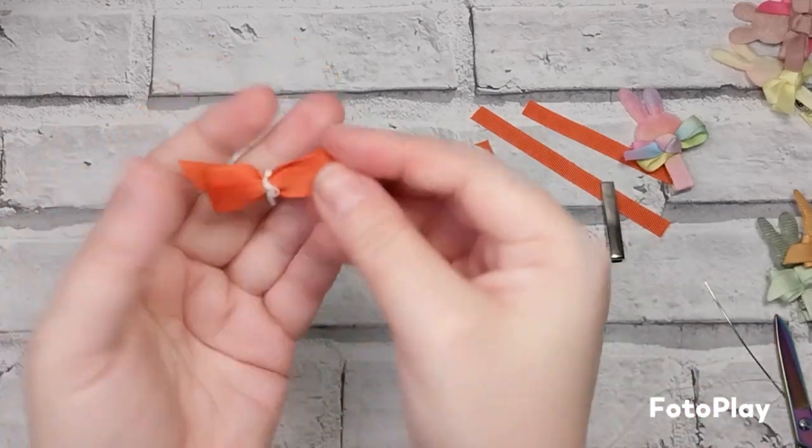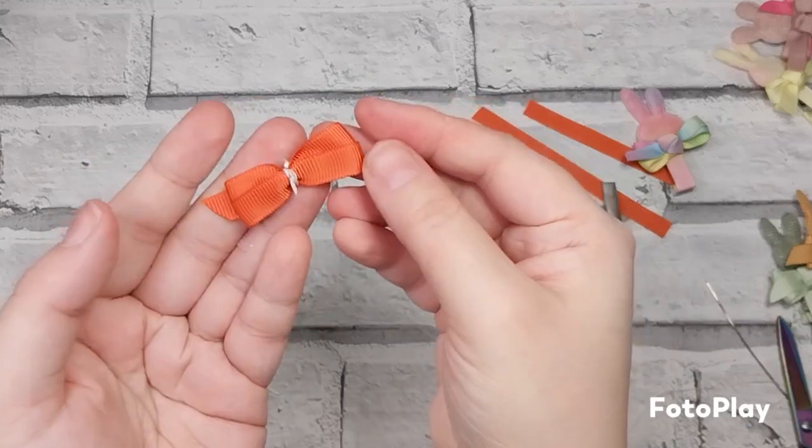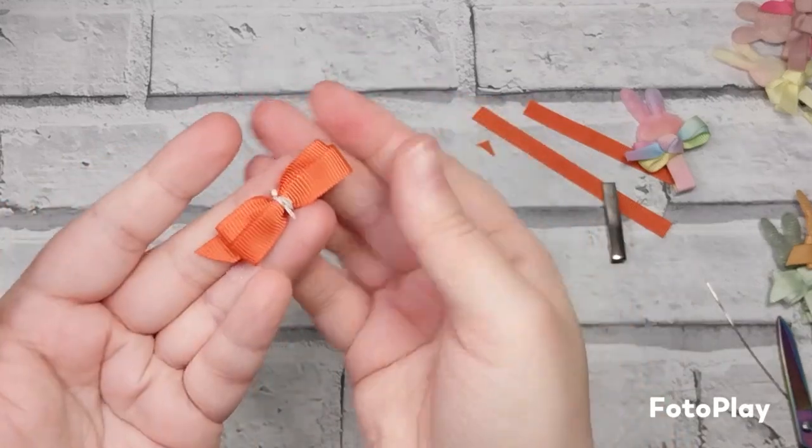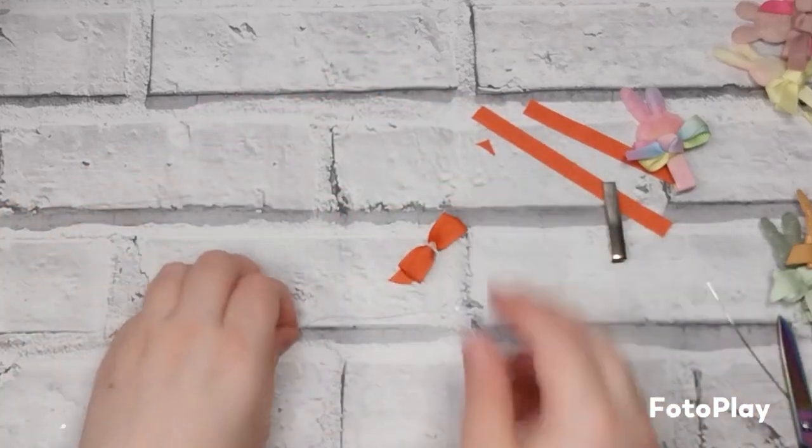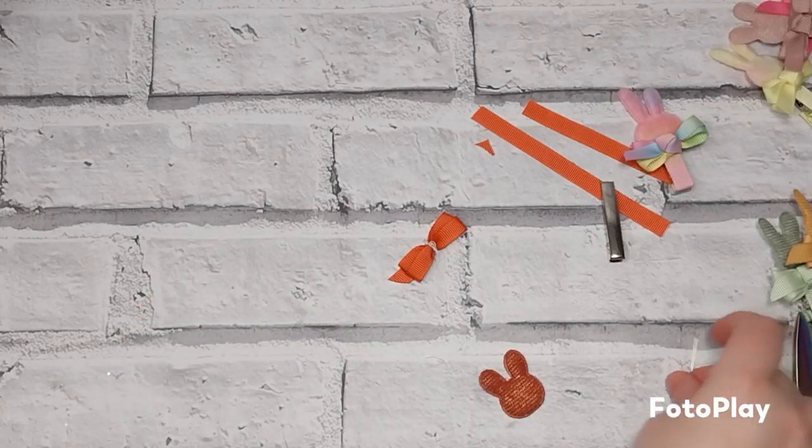Once I've got it like this, I like to do a little nice gentle curve and heat seal. There you have got your little mini bow.